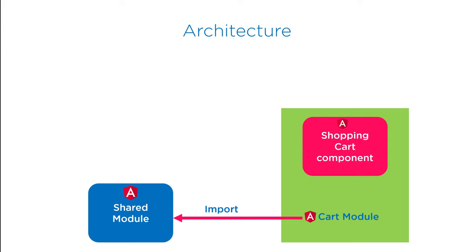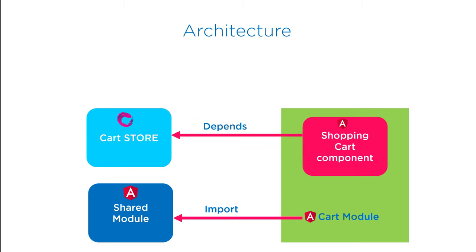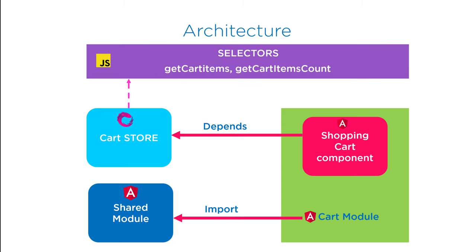Since we have created a shared module which has the Angular Material module, the cart module will import the shared module. With this we will be good to go with the Angular Material components. Next, in order to show the added cart items, the shopping cart component has to communicate with the cart store. Therefore the shopping cart component has to take the dependency onto the cart store. Remember the flux principle — application data must flow unidirectional. This is the inspiration behind the reactive Angular application. Therefore the cart items and their count data must flow from the cart store to the selectors, and then it will reactively arrive at the component.